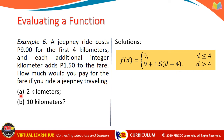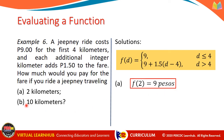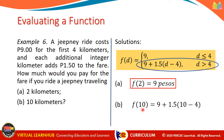For letter a, traveling a distance of 2 kilometers, we use f of d equals 9 since d is less than or equal to 4. So f of 2 equals 9 pesos. For letter b, traveling 10 kilometers, since 10 is greater than 4, we use f of d equals 9 plus 1.5 times (d minus 4). Substituting 10: f of 10 equals 9 plus 1.5 times (10 minus 4), giving us f of 10 equals 18 pesos.